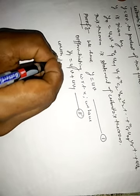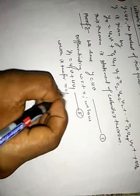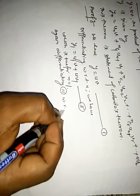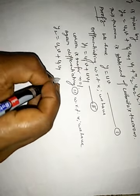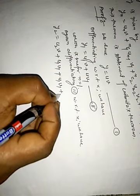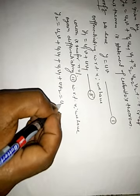First, we have y equals u·v. Differentiating with respect to x, we have y1 equals u1·v plus u·v1, equation number 2, which is true for n equals 1. Again differentiating equation 2 with respect to x, we have y2 equals u2·v plus 2u1·v1 plus u·v2, equation number 3, which is true for n equals 2.